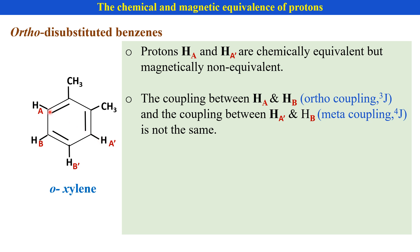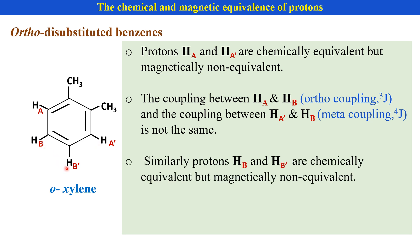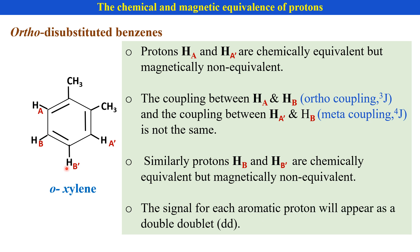That is, the coupling of HA with HB is ortho coupling, and HA' with HB is meta coupling — there are different coupling constants for HA and HA'. Therefore, they are magnetically non-equivalent. Similarly, HB and HB' are also chemically equivalent but magnetically non-equivalent.